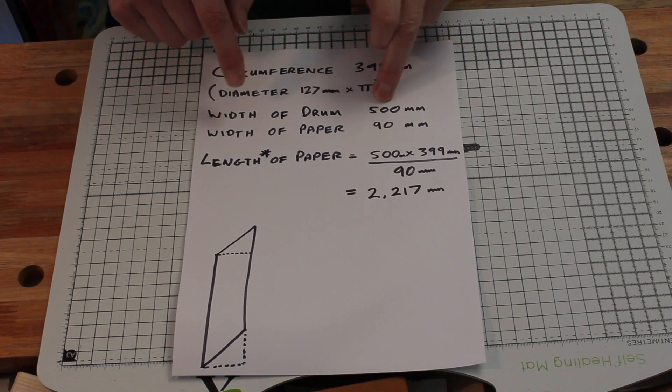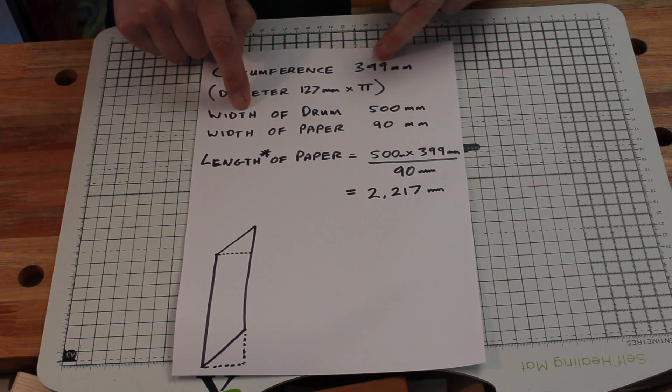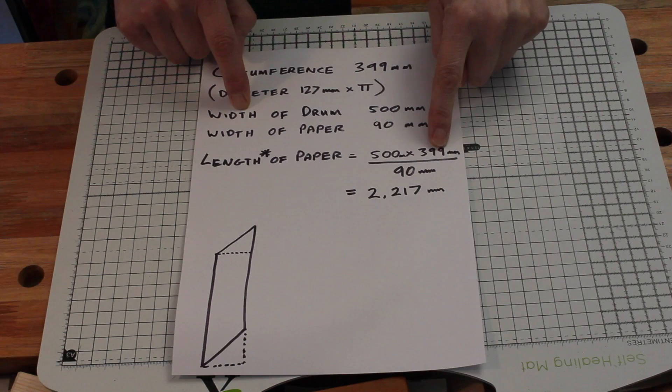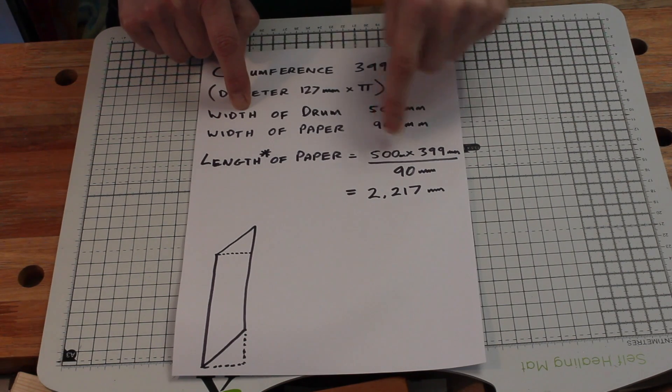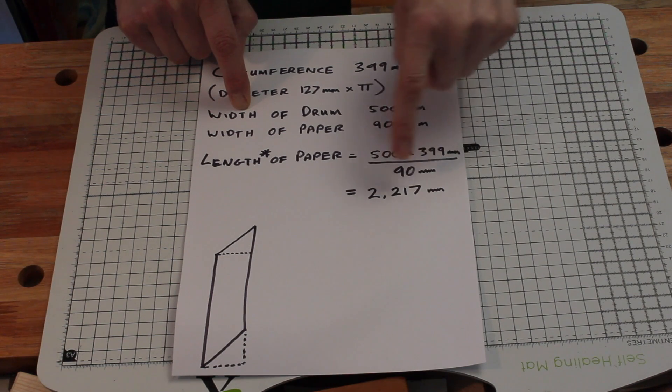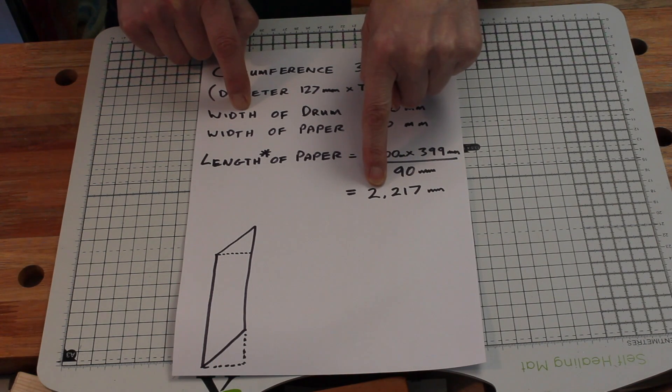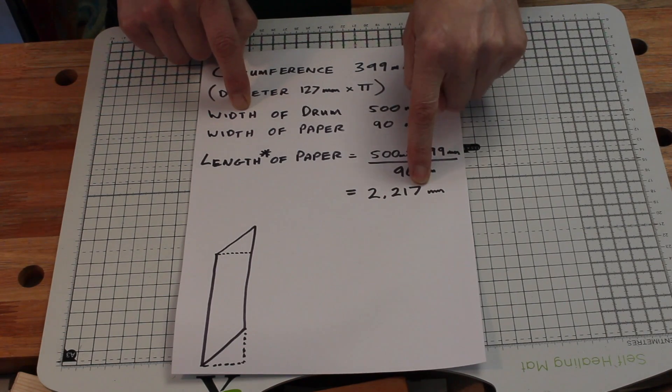We know the width of the drum is 500 millimeters. So multiplying the width by the circumference gives us the total area of the sandpaper that we need. We know that the width of the paper is 90 millimeters. So if we divide that into the area of the drum, we get the length needed is 2,217 millimeters. Two meters, 217 millimeters.